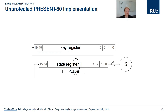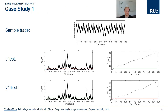This slide shows the architecture of the unprotected serialized PRESENT hardware implementation analyzed in the following two examples. On the top of this slide, we see a sample trace recorded by measuring the voltage drop over a 1 ohm shunt resistor in the VDD path of the power supply of a Spartan 6 FPGA using a digital sampling oscilloscope. On the bottom, there are four figures showing the results of a univariate first-order T-test and a G-square test, also showing the progress of the highest confidence values over the number of traces. Clearly, a significant amount of leakage is present and can be detected with confidence after less than 100 traces. The maximum confidence expressed as a minus log 10 value is slightly above 80.